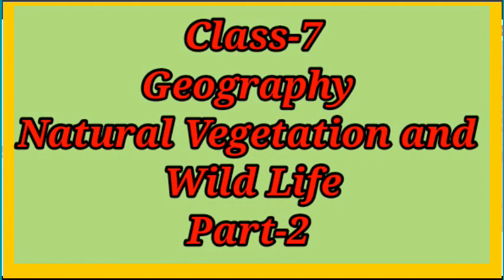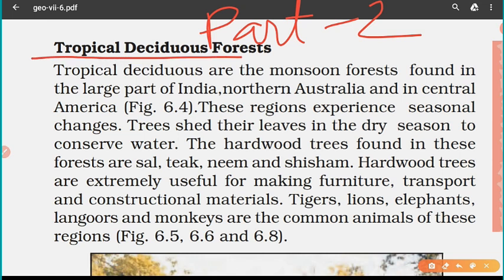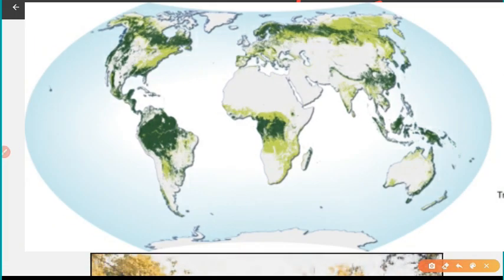Dear students, we were discussing the chapter Natural Vegetation and Wildlife, and today we are going to start part 2 of this chapter with the topic tropical deciduous forest. In the previous video we discussed about tropical evergreen forest or the rainforest, so now we'll discuss about monsoon forest, known as tropical deciduous forest.